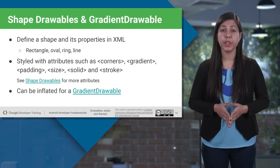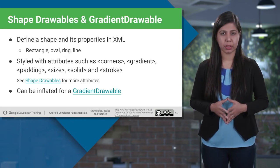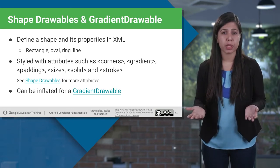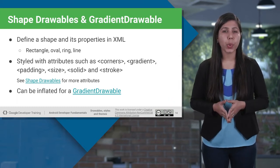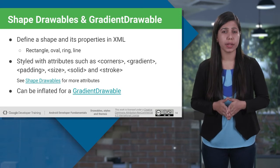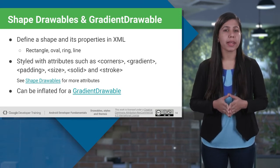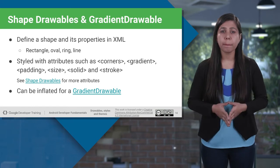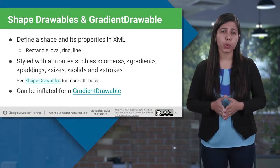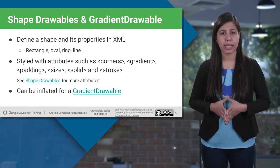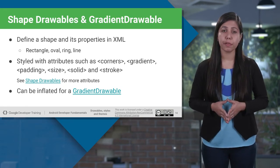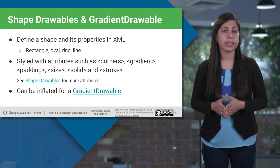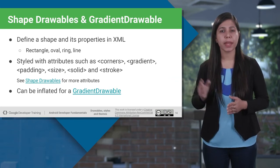By default, when UI components are drawn, they are rectangular in shape. But you can define different shapes, like oval or ring, in the XML. You can style your UI component by setting its corner attribute, padding, size attributes, and many others. Be sure to check out the ShapeDrawable documentation link for a list of attributes you can manipulate. For gradient background color, you should define it inside the XML within the shape element.